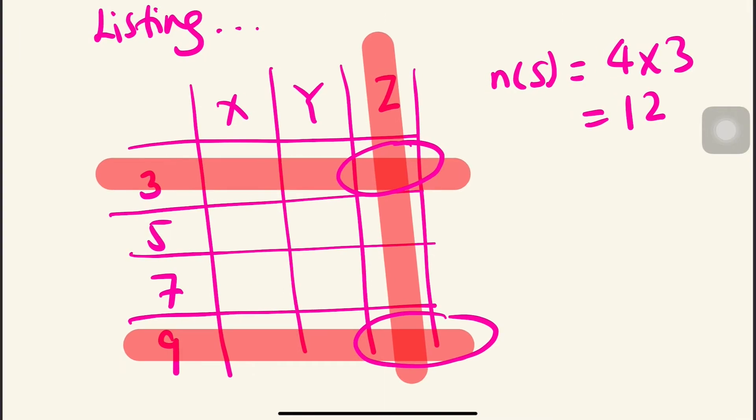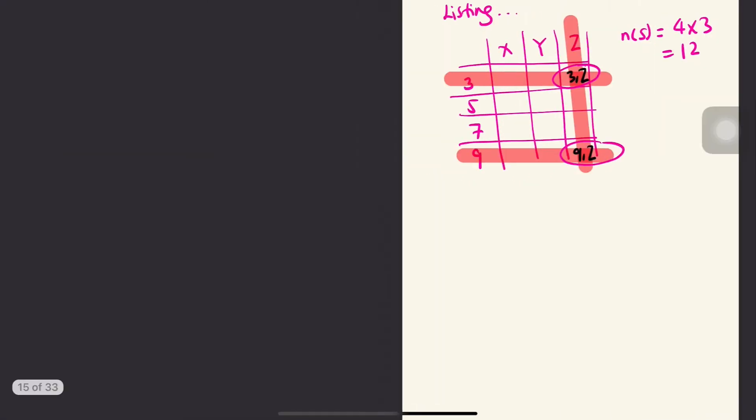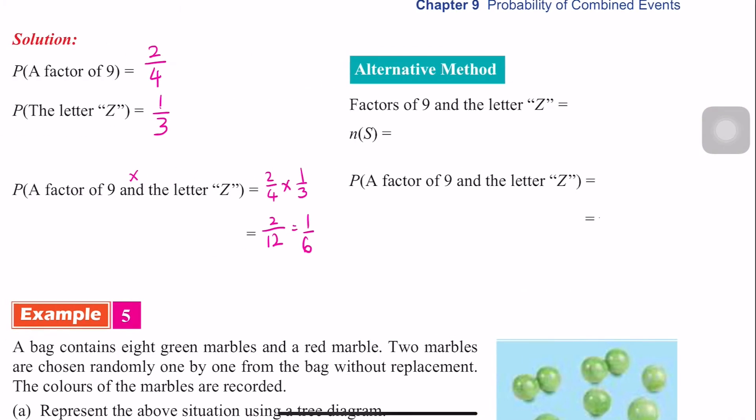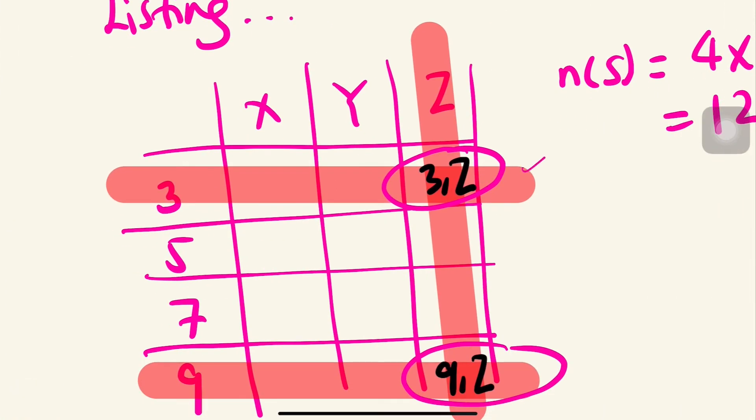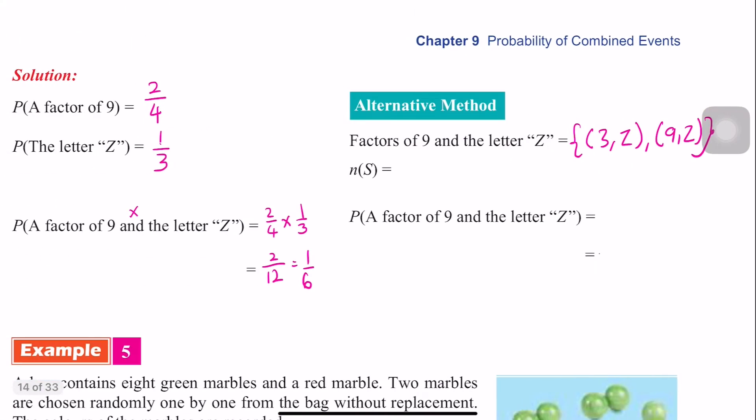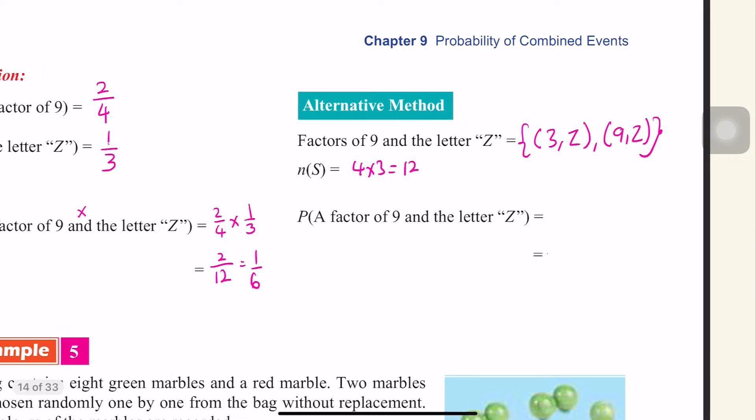Which are: this one is 3Z, this one is 9Z. Right? So factor of Z is (3, Z) and (9, Z). Correct? 3Z, 9Z.